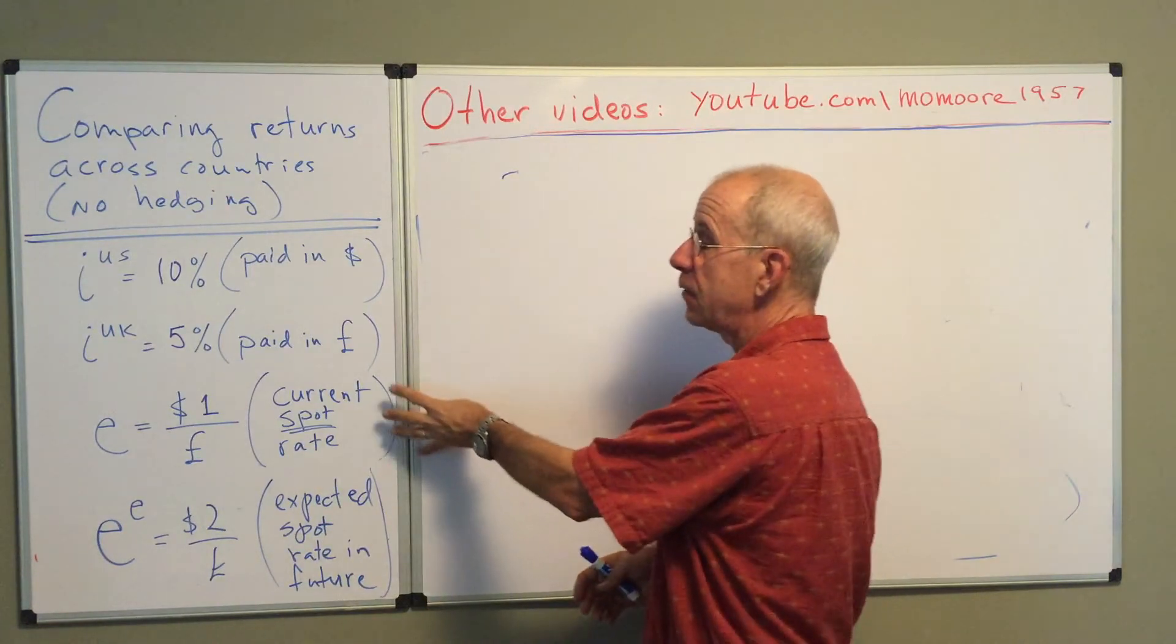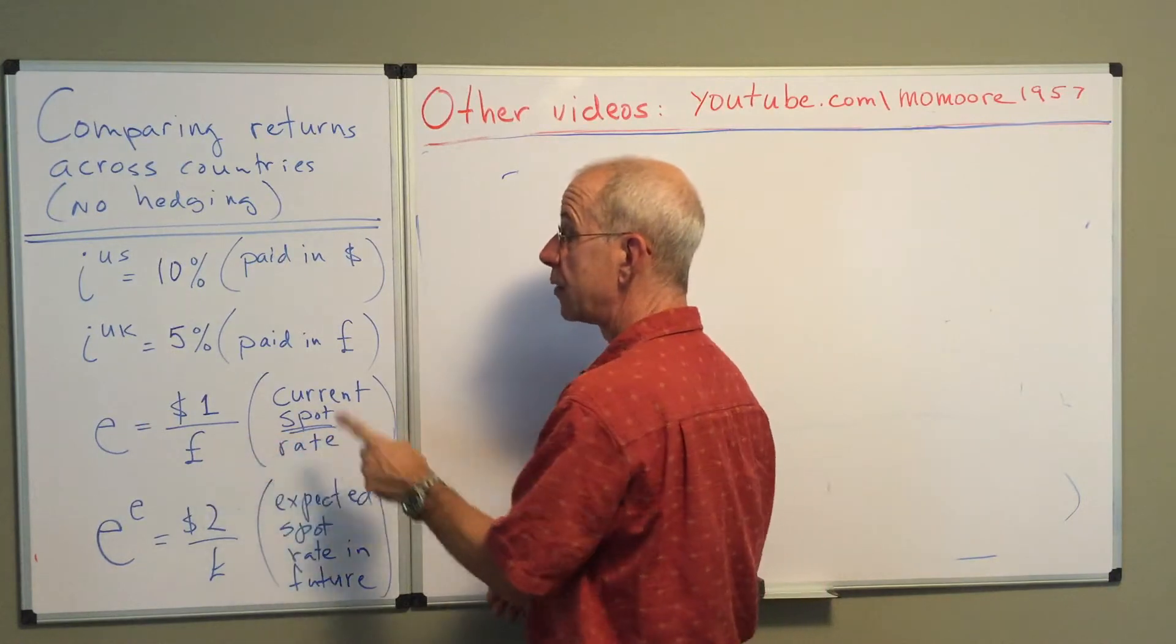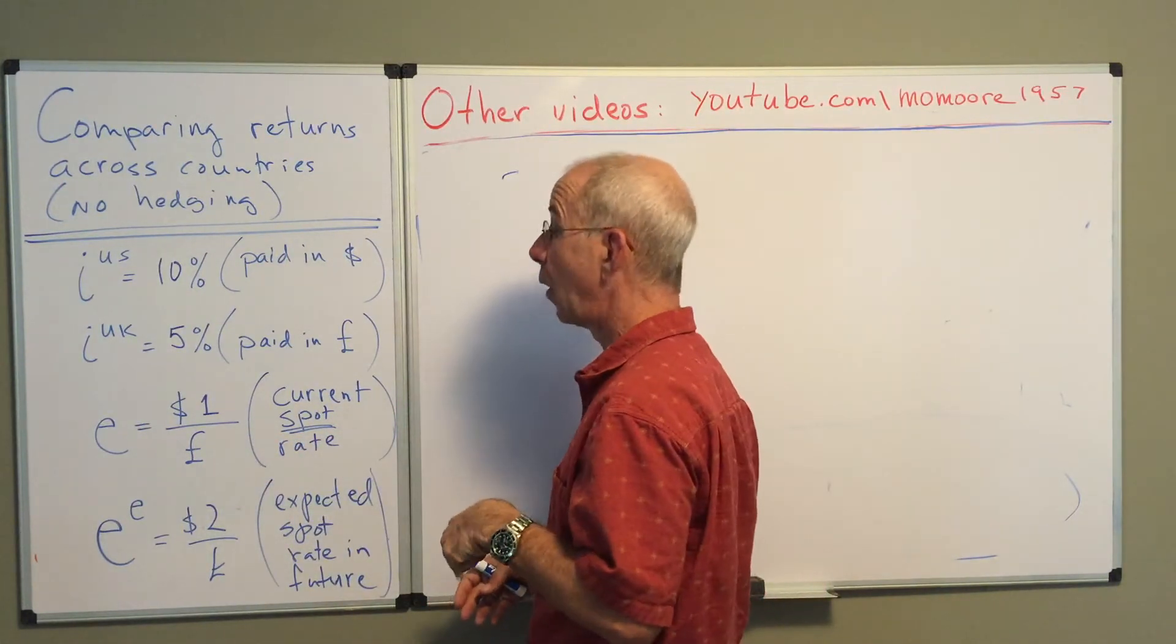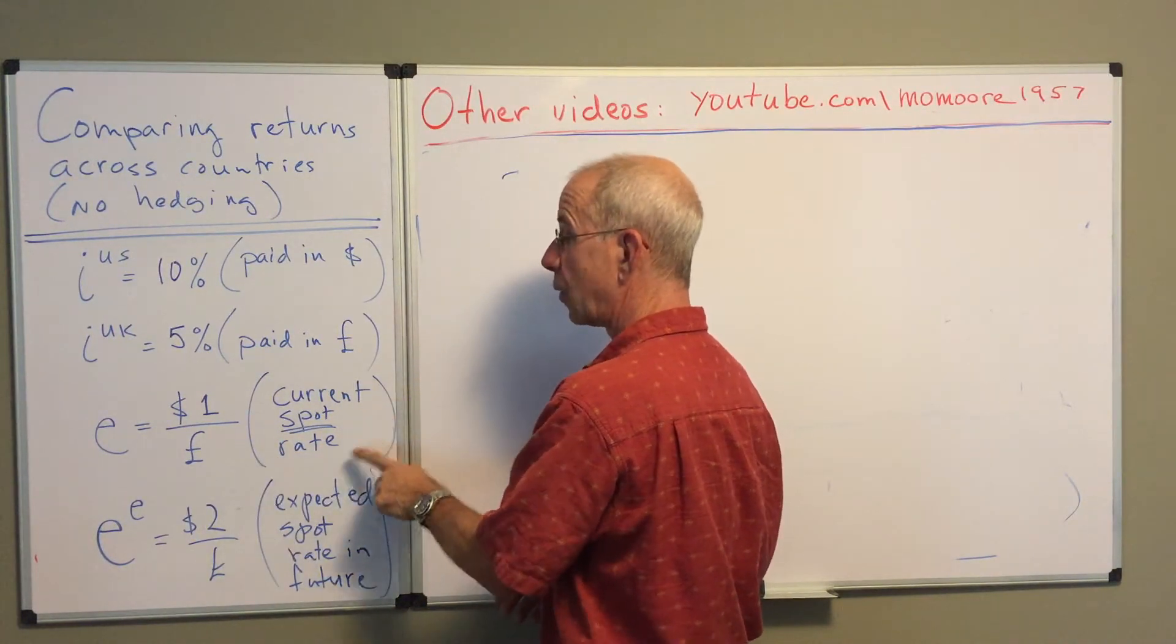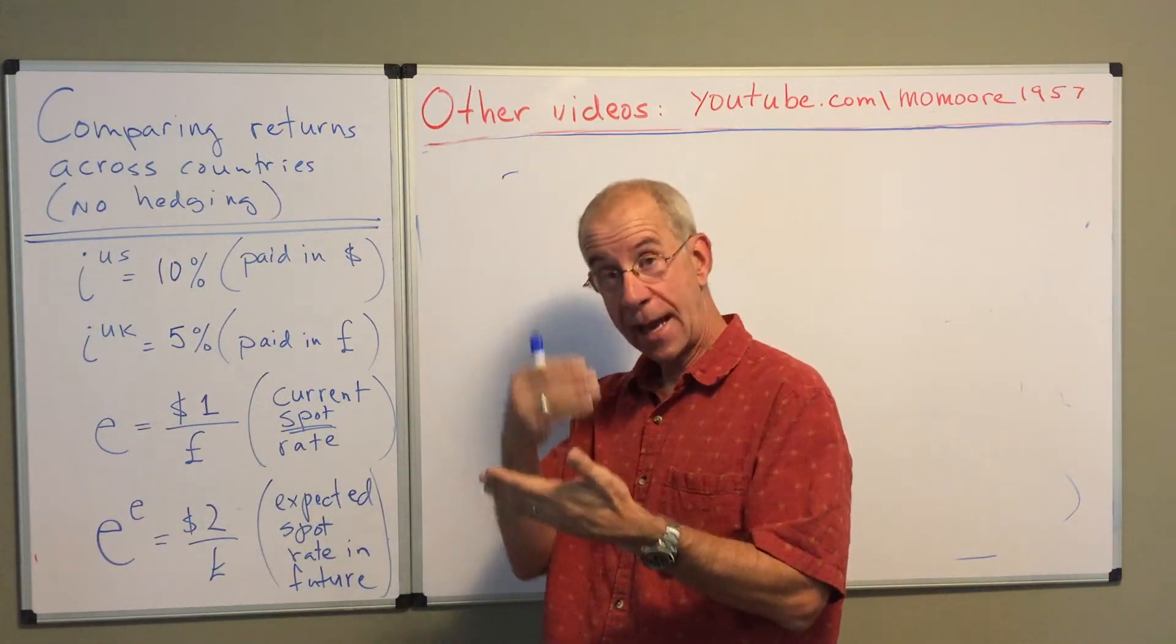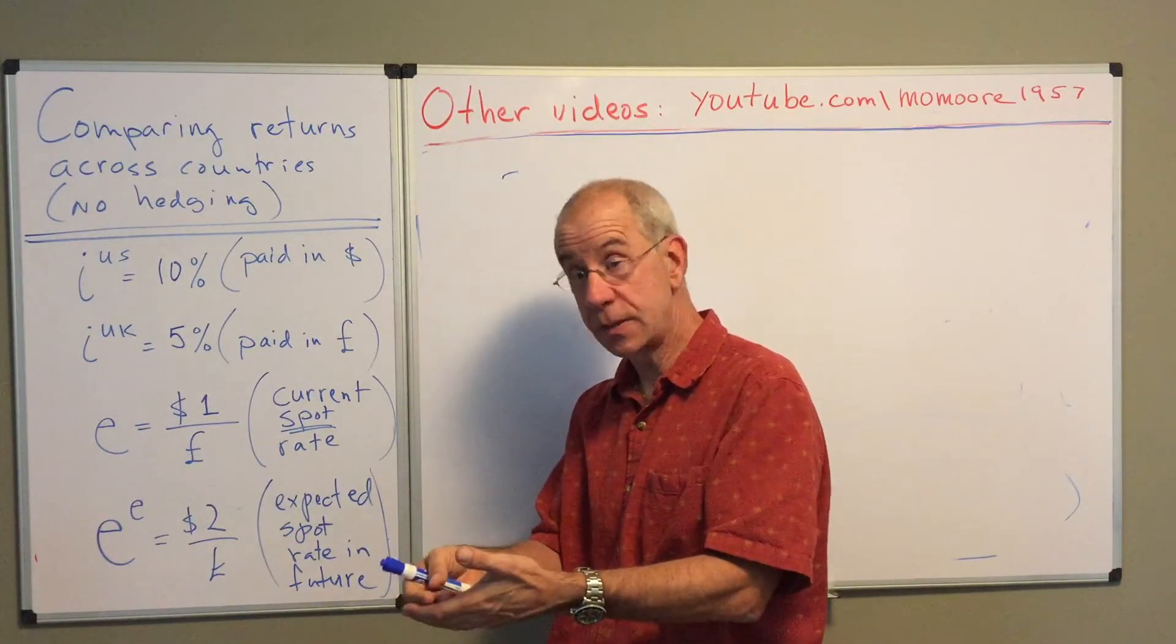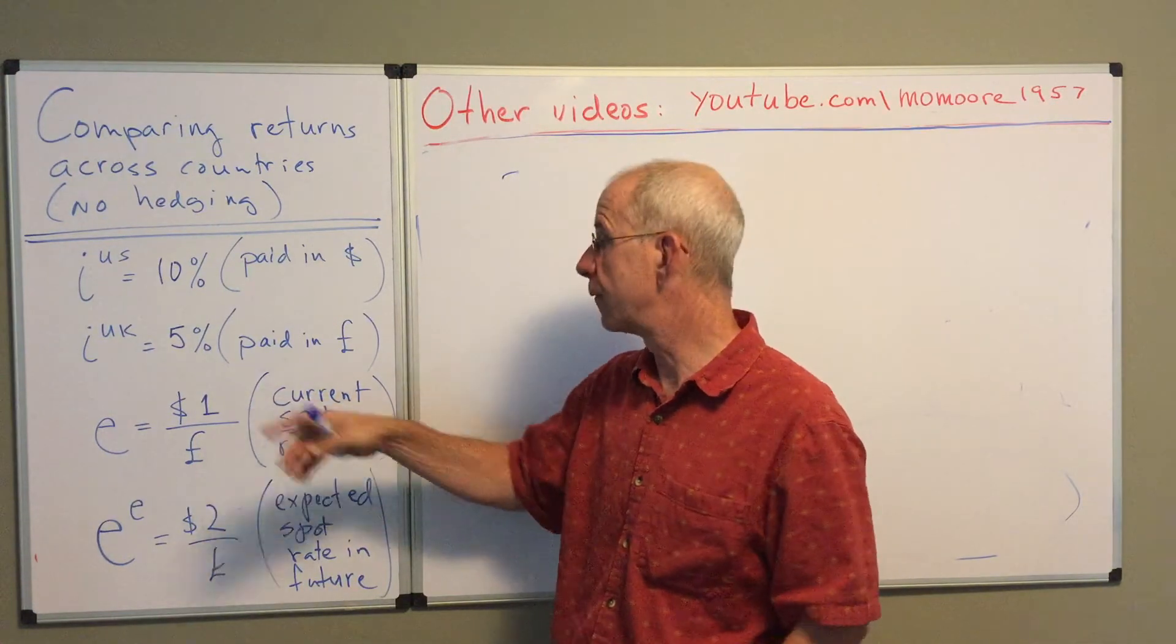Now I have a couple of exchange rates here. We have the current price of pounds or dollars, depending on how you look at it. The current spot rate is it takes one dollar to buy a pound. So that's how many dollars an American coming to the foreign exchange market would need to buy a pound. For simplicity, we're just doing it one for one.